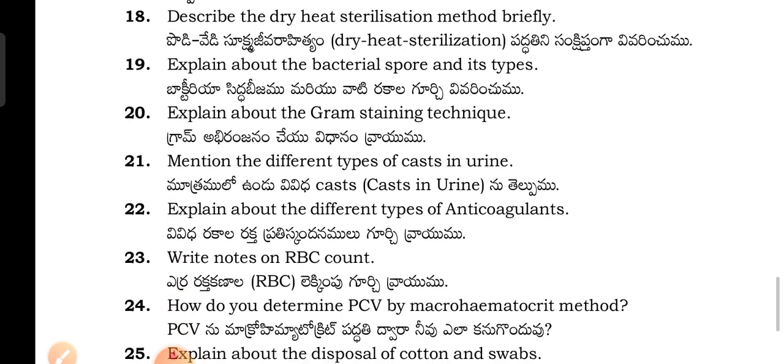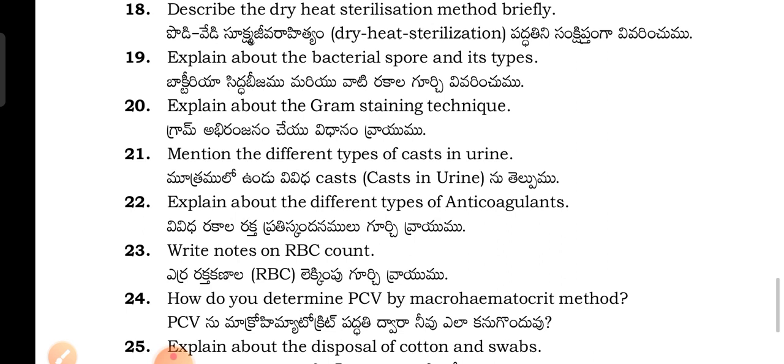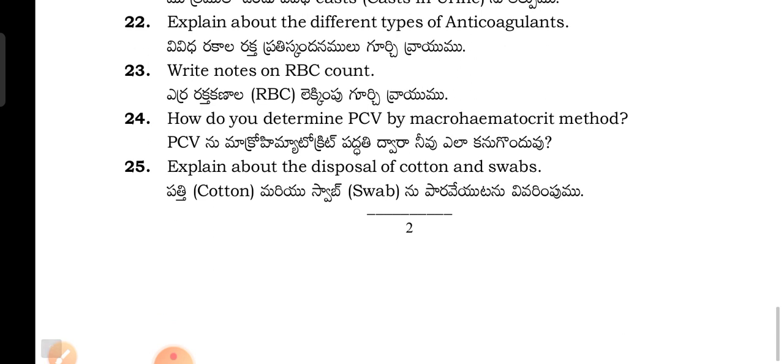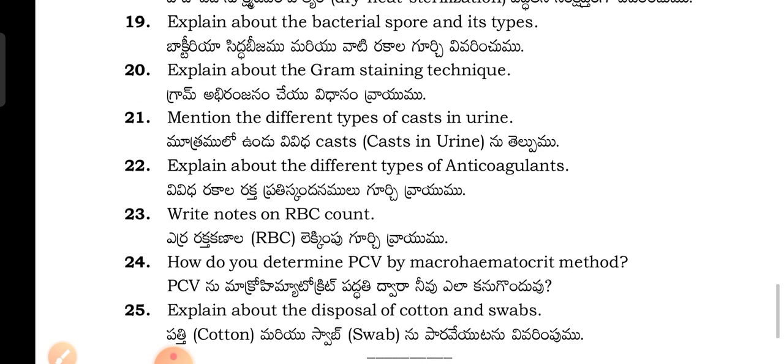Describe the dry heat sterilization method briefly. Mention the different types of anticoagulants. Write brief notes on RBC count. How do you determine PCV by micro hematocrit method? Explain about the disposal of cotton and swabs.